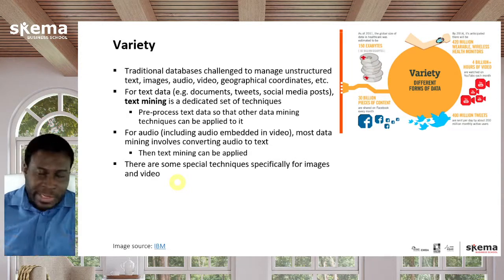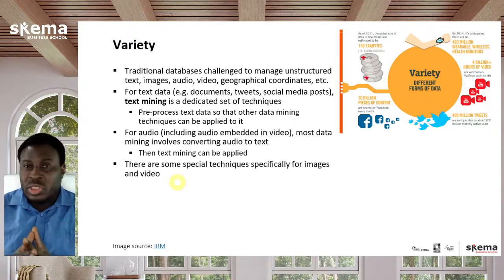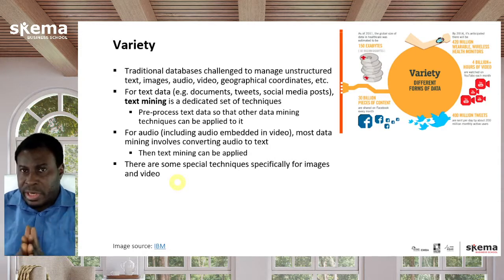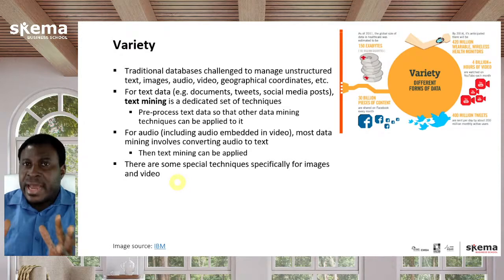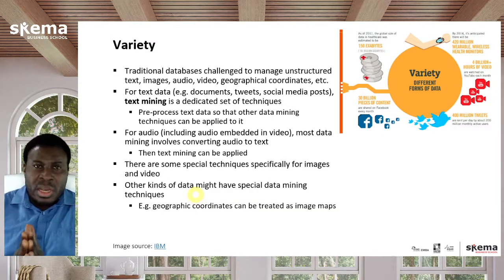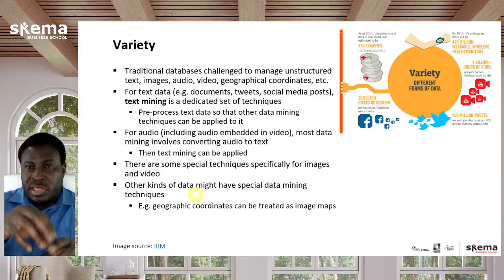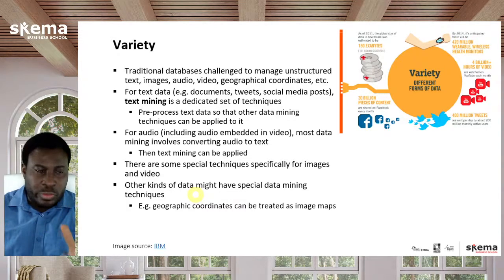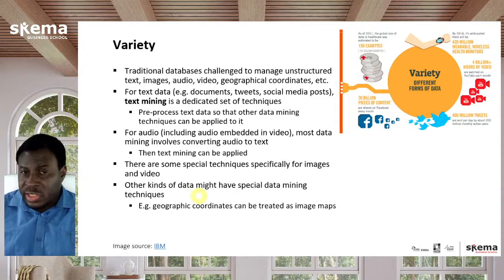When looking at still images and moving images in video, text mining can't handle those directly, but there are special techniques — especially with deep learning — for recognizing objects in images and video. It's quite standard now to recognize objects in images. For other special data types such as geographic coordinates, there are techniques to map coordinates into map coordinates, either as an image or in some computer representation of geographic space.